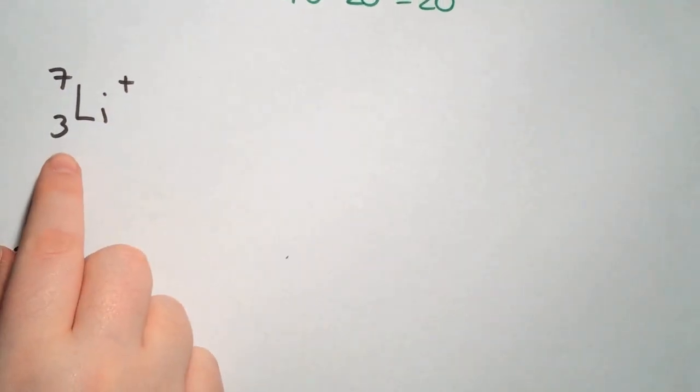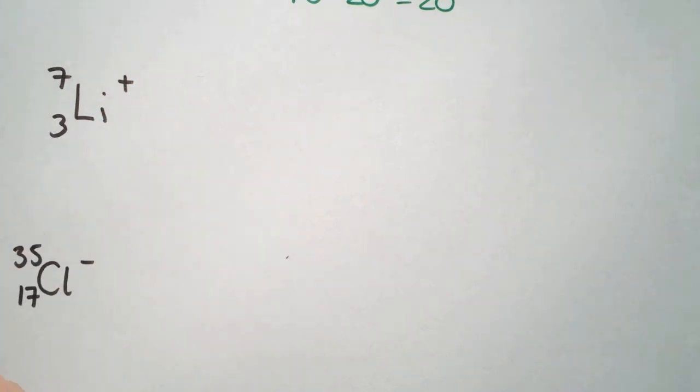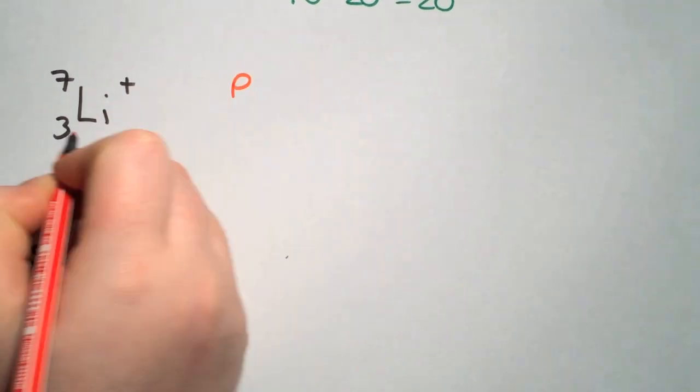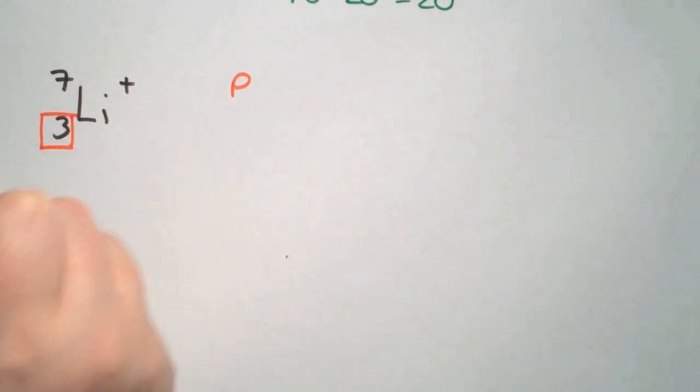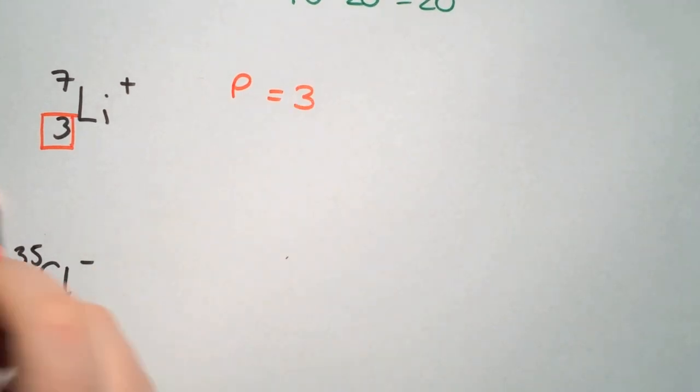This example here is an example of a positive ion. So we have a positive charge here. So when we look at our electrons it will not be equal to our protons. However, when we are looking at protons, again it is just this number at the bottom here, the atomic number. So our protons equals 3.